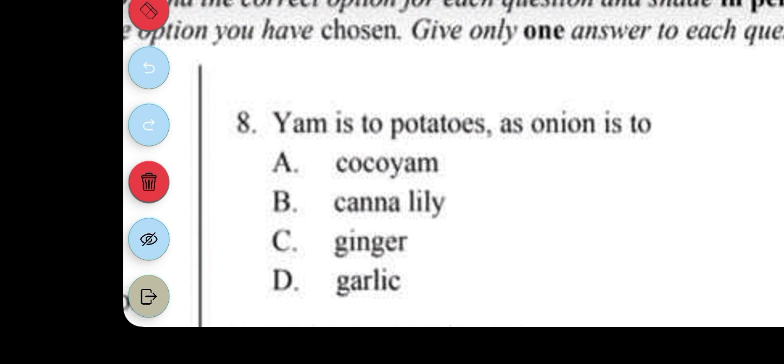Question 8. Yam is to potato as onion is to: A. Cocoyam. B. Canna lily. C. Ginger. D. Garlic. The answer to question 8 is garlic, because onion is a bulb, garlic is also a bulb. Yam is a tuber, potato is also a tuber.